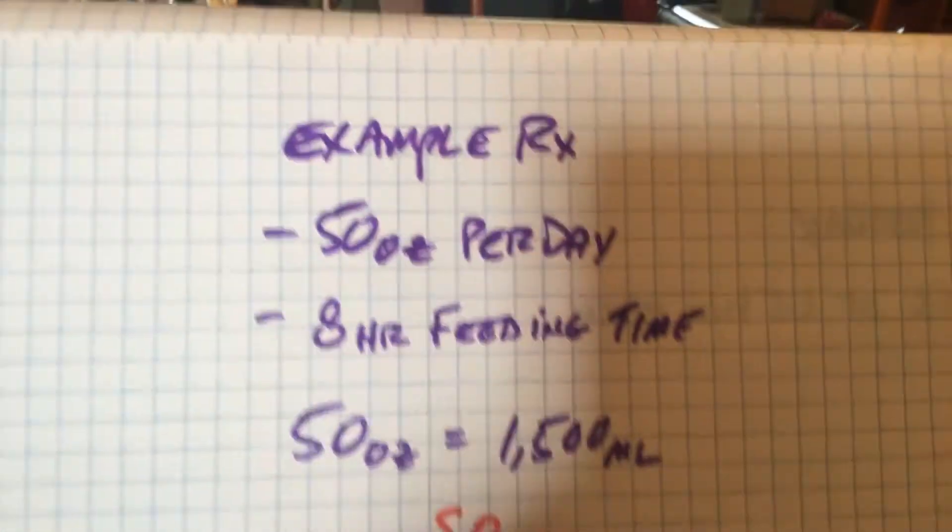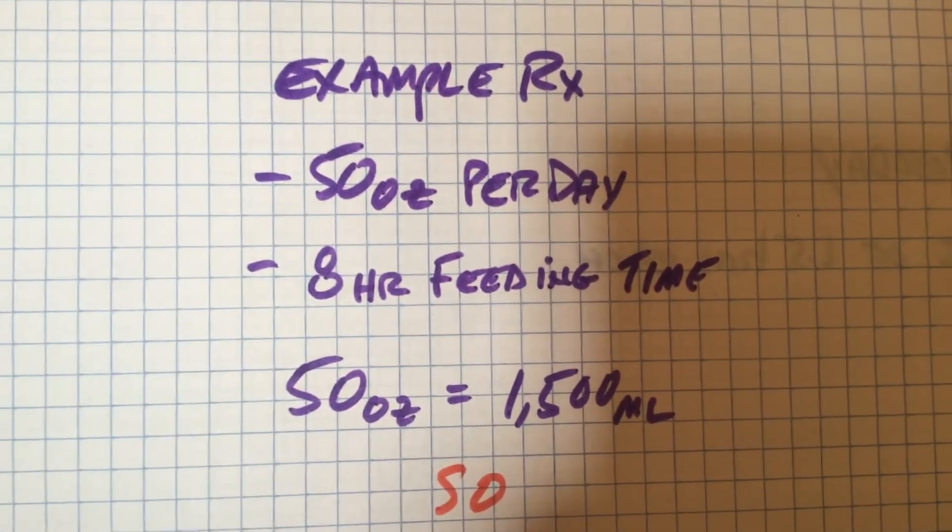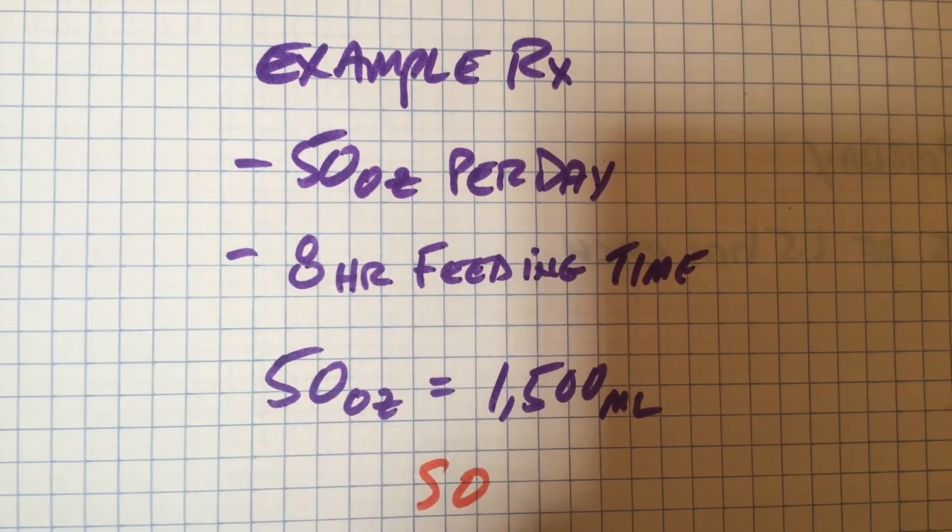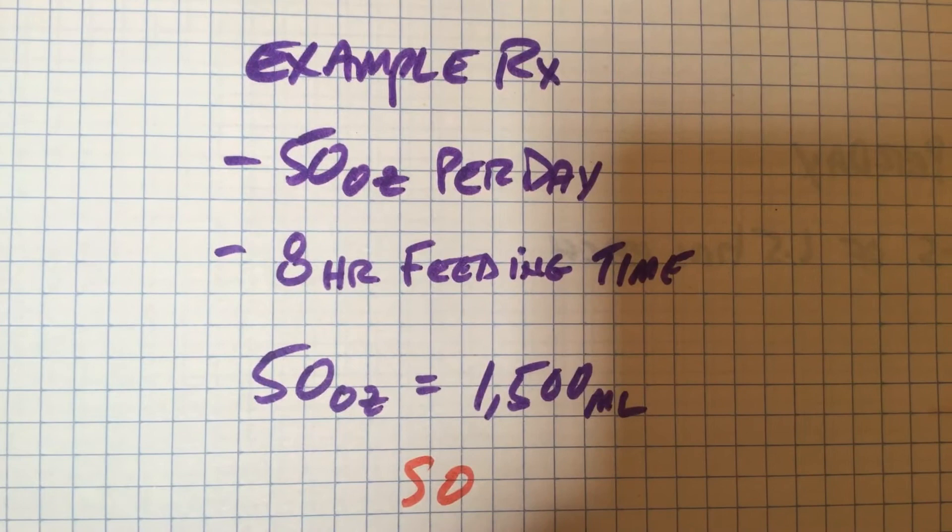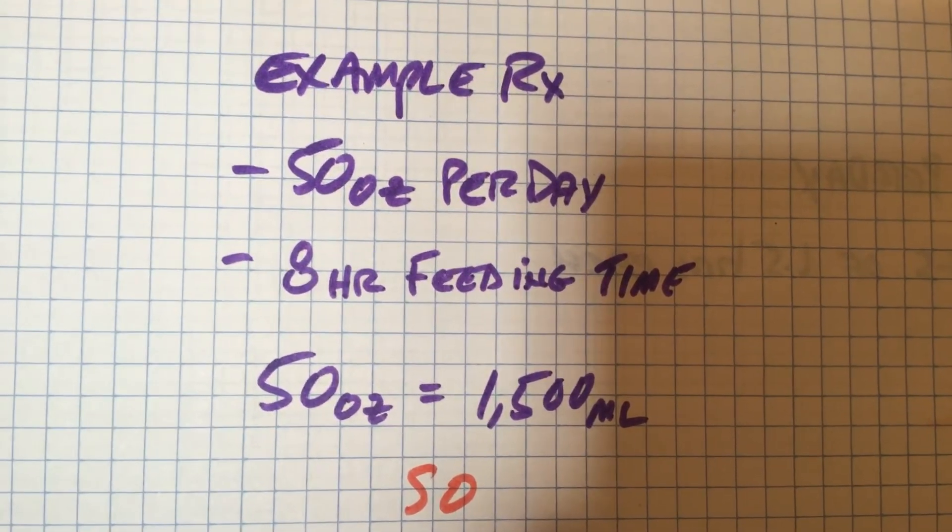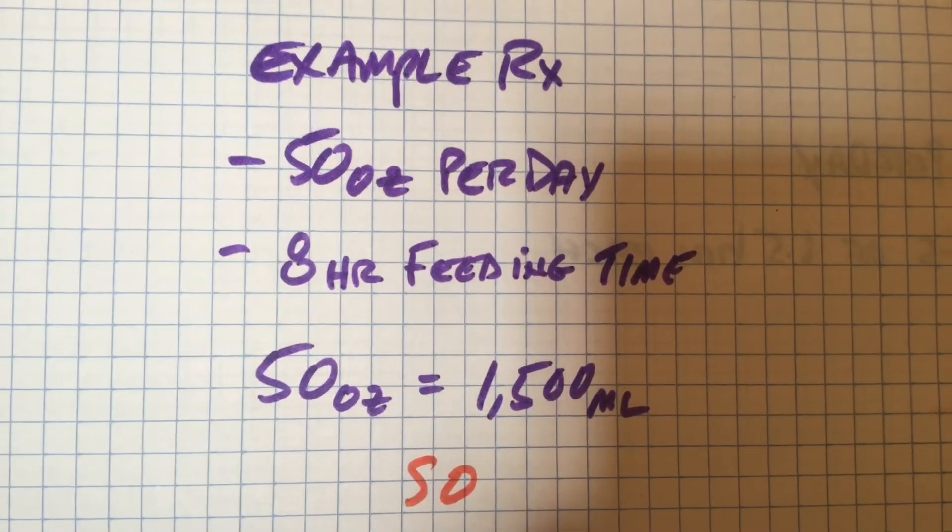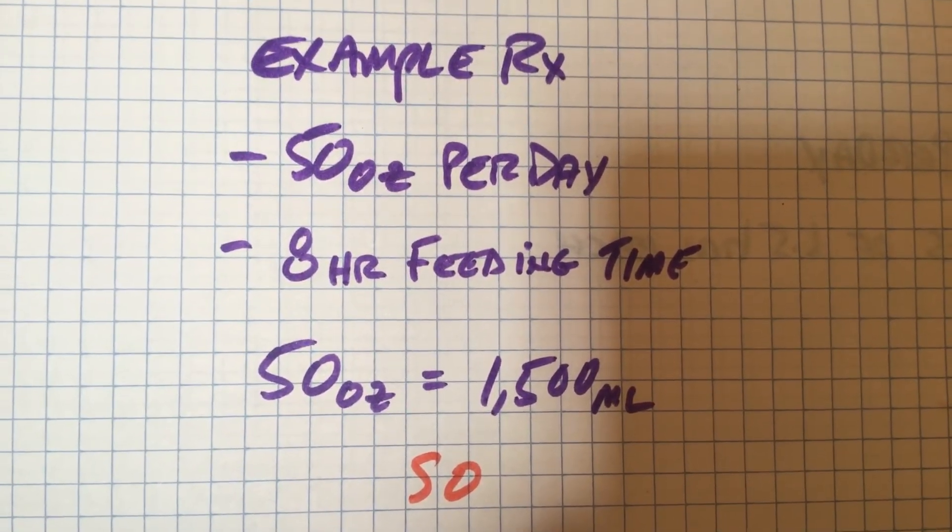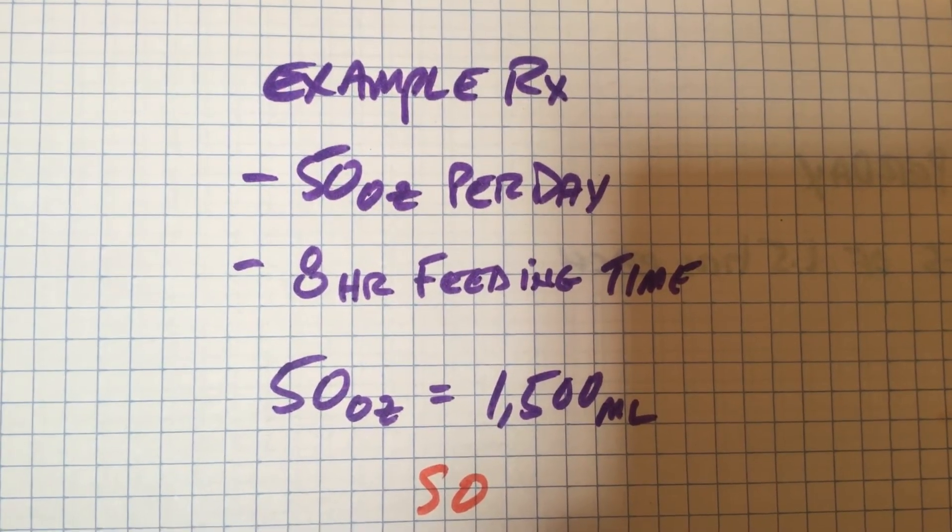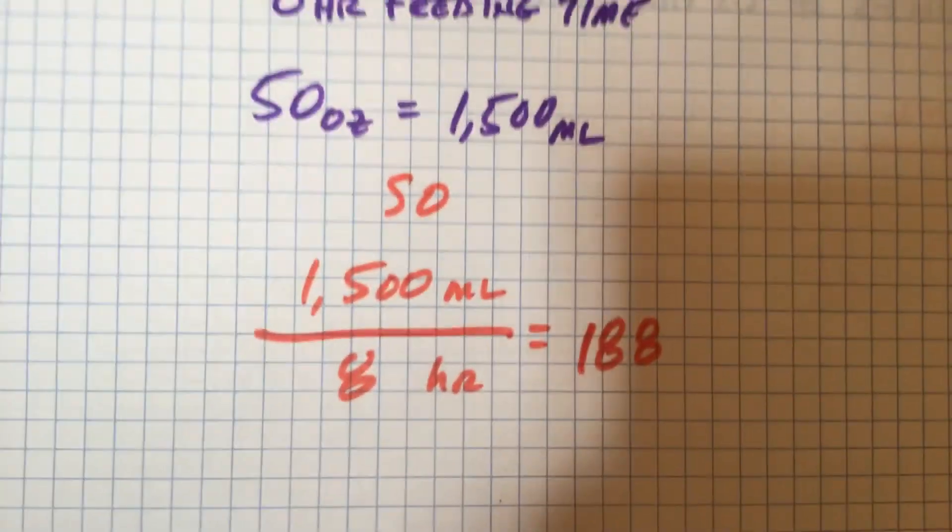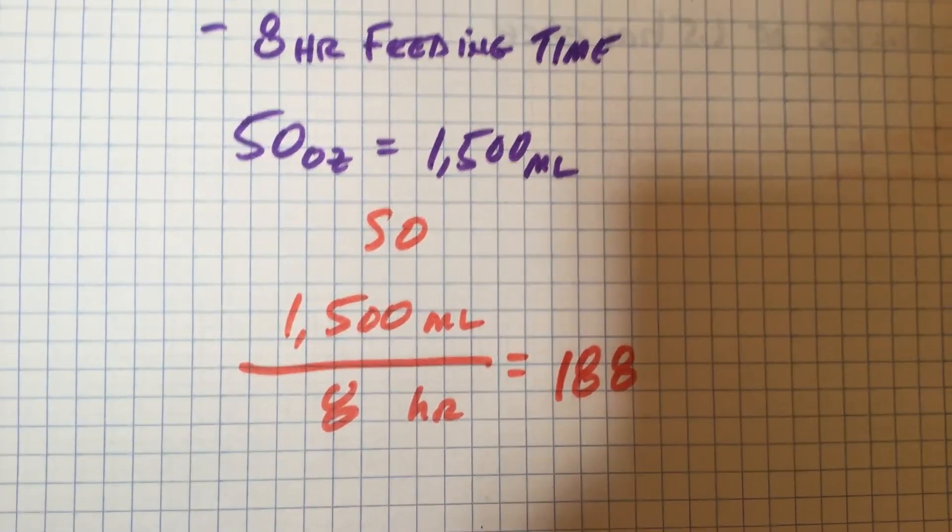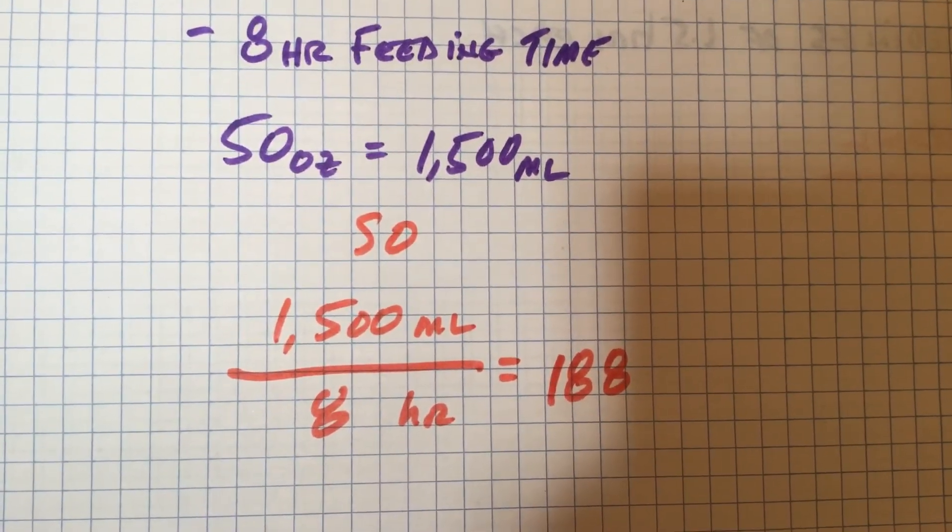Here's another example. 50 ounces per day. So the doctor says 50 ounces per day. And you've decided to do one straight eight-hour feed in one time. So you hook up the feeding pump and it's 50 ounces, which is really 1,500 milliliters. So it's 1,500 divided by eight hours, and you set your pump at 188.